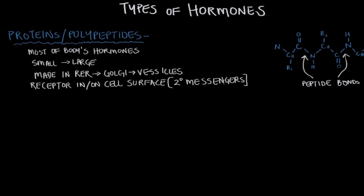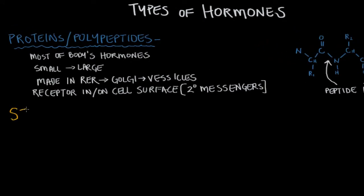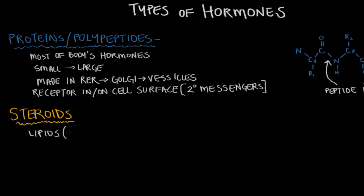The second major type of hormones are steroids. When we hear steroids, the first thought that comes to mind might be athletes getting in trouble with their regulating committees. But steroids are actually one of the major types of hormones our body uses to communicate — there are a lot of them. Steroids come from lipids, and the major lipid they come from is cholesterol.